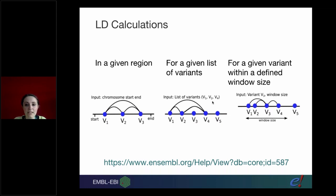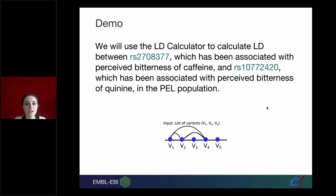We're going to use the LD calculator to calculate the LD between these two variants - associated with perceived bitterness of caffeine and quinine respectively - again in the PEL population. In this example with three variants out of five, you can see we're only calculating the LD with those three. You can also start with one variant and specify a window size to calculate LD that way.